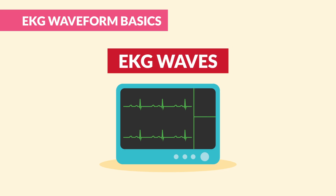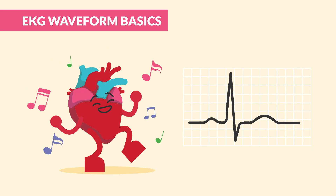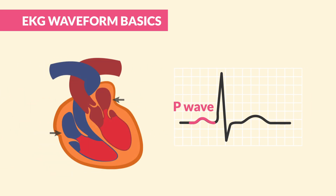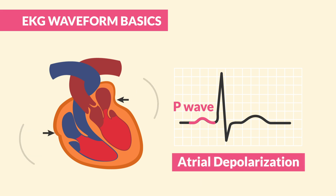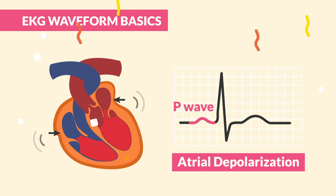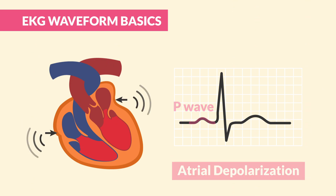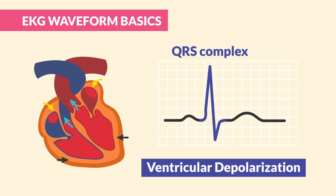Now it's time to talk about those EKG waves — those little squigglies on the EKG paper. Think of each wave kind of like a dance move, all choreographed by the heart. First up is the P wave — think A for atrium. The P wave is all about atrial depolarization, aka the atrial contraction, which means the heart is firing off an electrical signal. Next we got the QRS complex. This is where the ventricles steal the show — ventricular depolarization, fancy words for the contraction or squeezing of the ventricles.